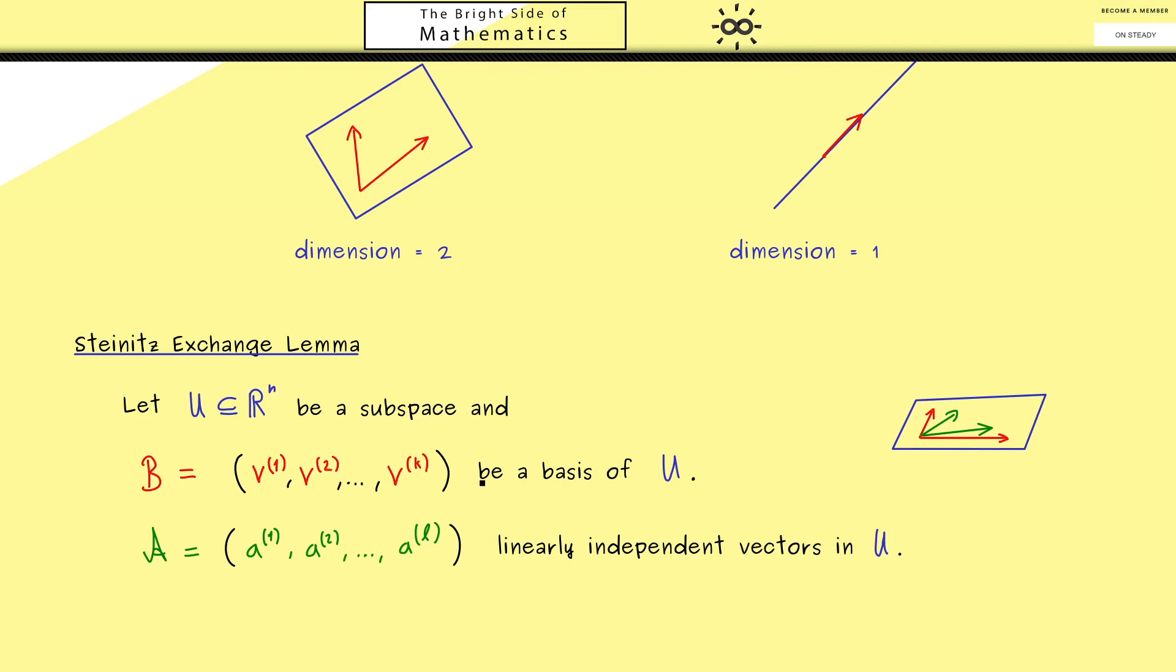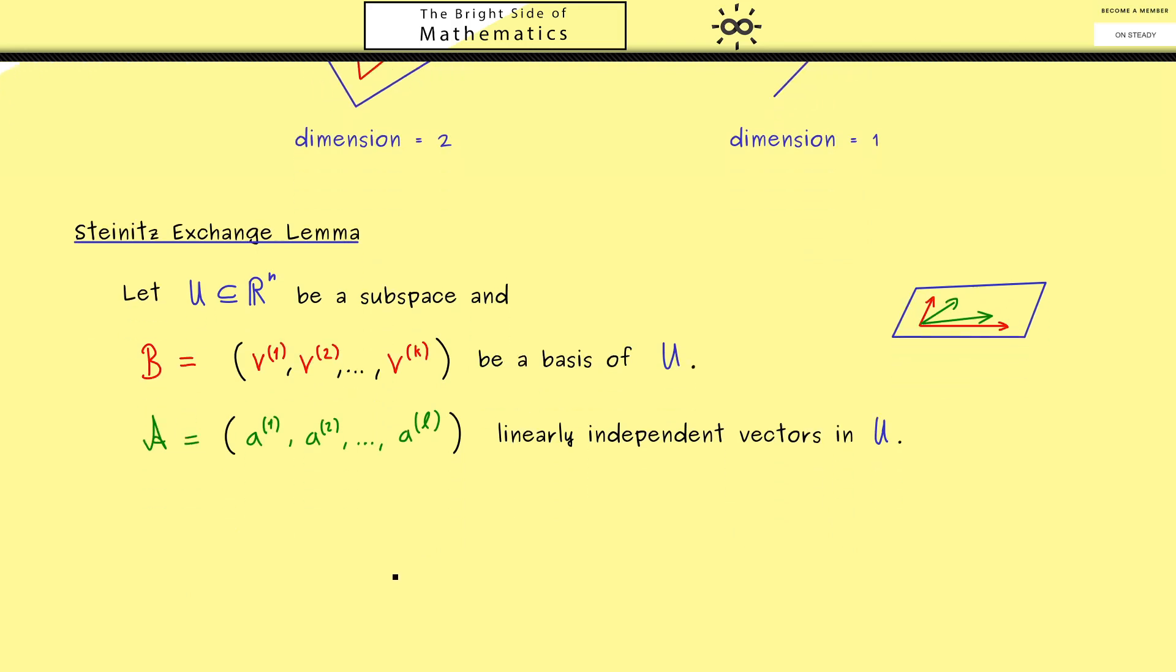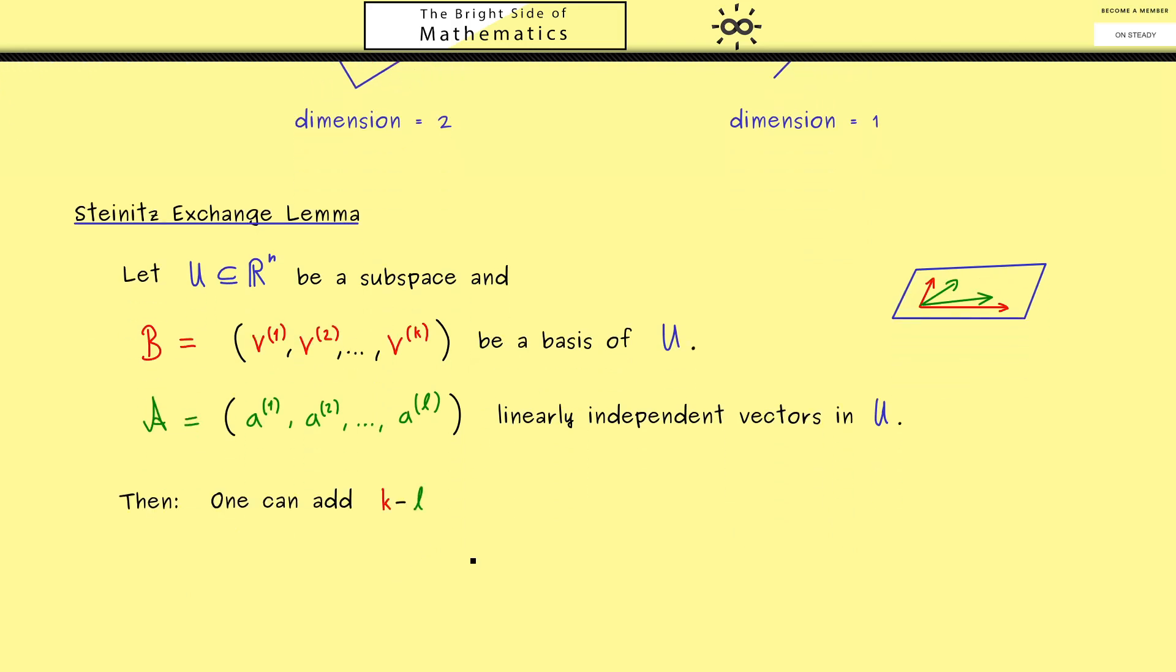Okay, and now Steinitz's Exchange Lemma tells us that we can form a new basis with this A by using some vectors in B. Indeed, the number of vectors we have to add is given by k minus L. And as I said before, if we do this, if we add these vectors, we get a new basis of our subspace U. In fact, this is already the whole claim, we can construct a new basis. It's called the exchange lemma because some vectors from the old basis are exchanged by new vectors.